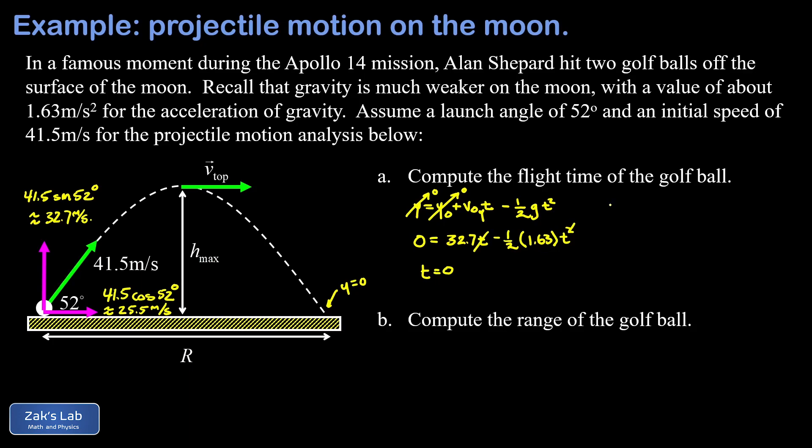So what we're going to do here is divide one of these t's out of the equation, and it leaves us with a nice linear equation. We get zero equals 32.7 minus, and I'll multiply the one half into the 1.63 here, minus 0.815 times t. Now if we solve for t, we're going to get the time for which the projectile lands. And to three significant digits, that comes out to about 40.1 seconds.